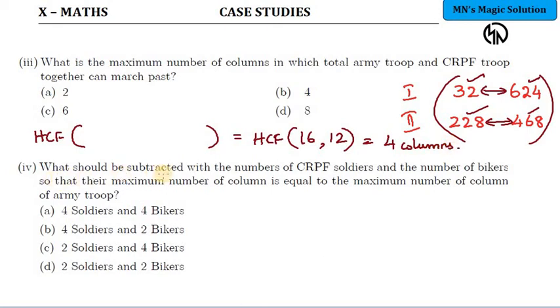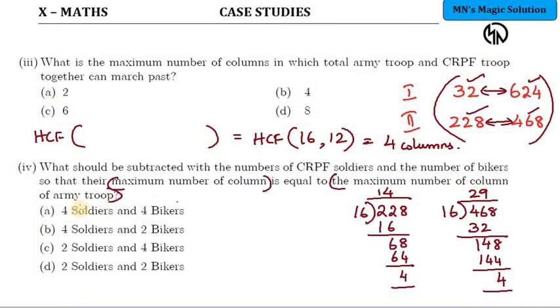Next question, what should be subtracted with the numbers of CRPF soldiers and the number of bikers so that their maximum number of column is equal to maximum number of column of army. What is the maximum number of columns of army troop? Already we found, HCF of 32 and 624.